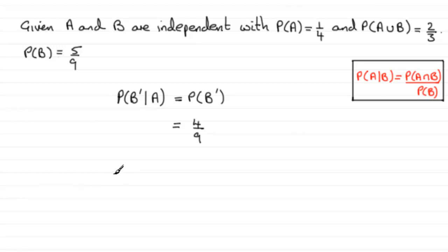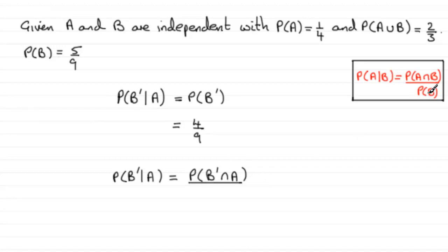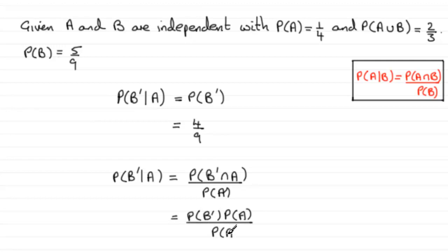Using this formula, the probability of not B given A equals the probability that both events occur — that is, the probability of not B and A — divided by the probability of the given event, which is A. Now since A and B are independent, not B and A are also independent. So this becomes the probability of not B multiplied by the probability of A, divided by the probability of A. The probability of A cancels out, leaving us with just the probability of not B.